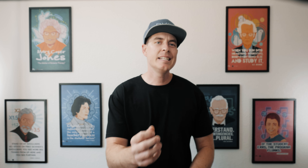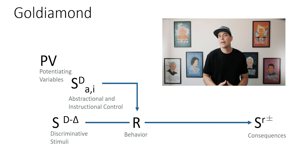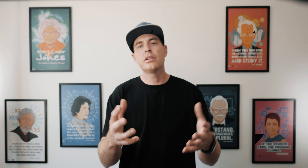In 1974, almost 50 years ago, Israel Gold Diamond created what's called the constructional questionnaire. To show the value of this, I need to first explain our assumptions of how behavior is influenced. Nonlinear behavior analysis can be shown through Gold Diamond and Thompson's conceptualization model that I've shown here. I actually covered this in depth in my continuing education course called Beyond the Task List, but let's just flash to a snippet of that real quick.